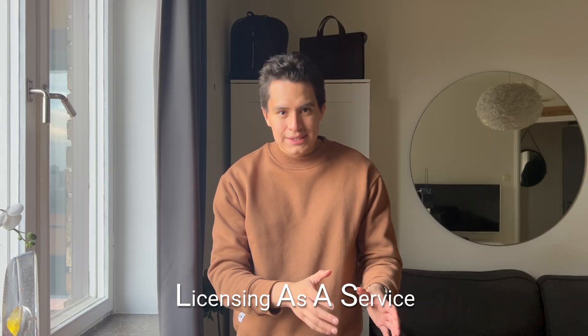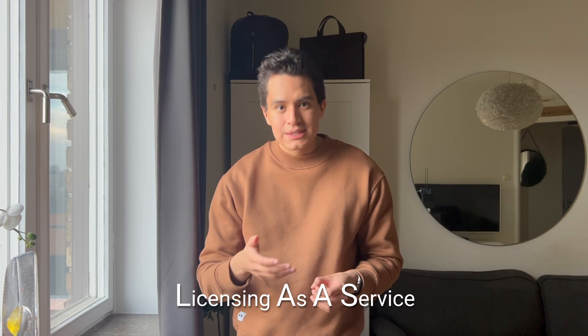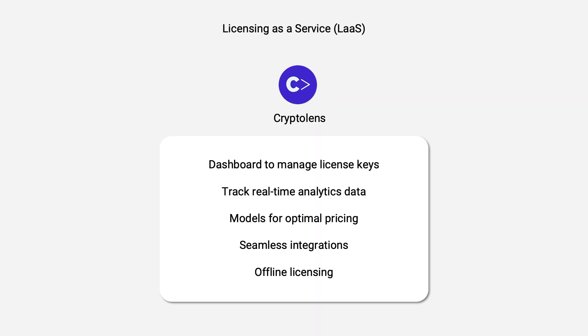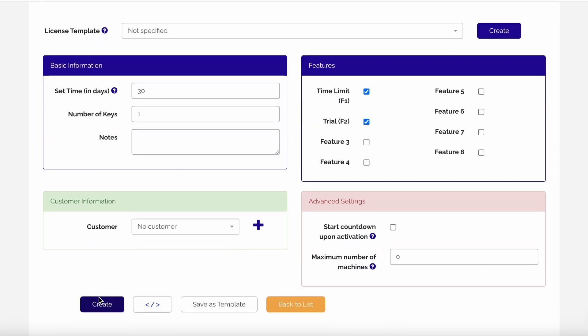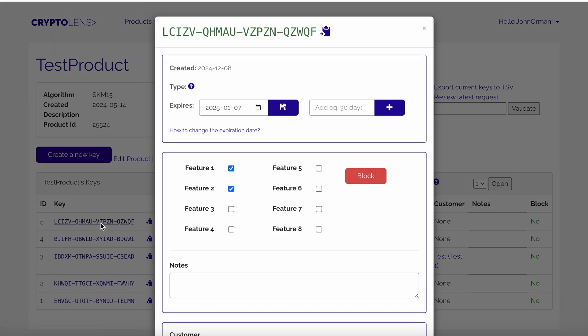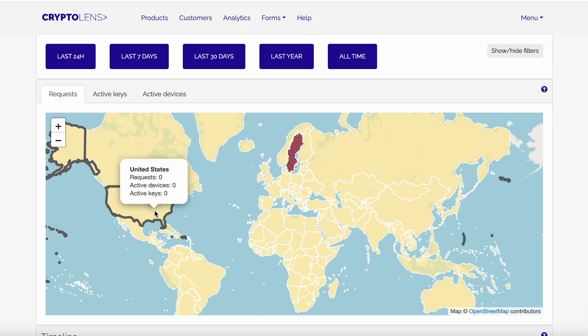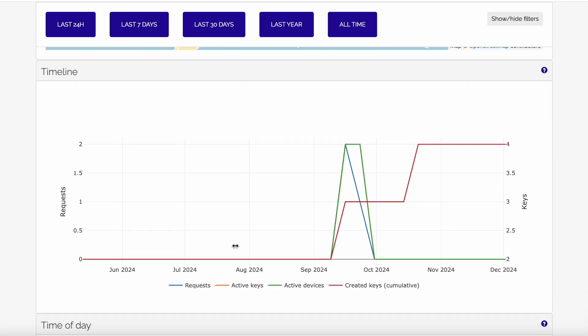Now you could code such a system yourself, but there are many benefits to instead outsourcing licensing to a licensing as a service, or LaaS, provider. When you work with a LaaS provider such as CryptoLens, you get so much more value out of the system without having to spend the time developing it yourself. For example, you can easily create and manage license keys in our dashboard and review real-time analytics data regarding how customers are using the product.